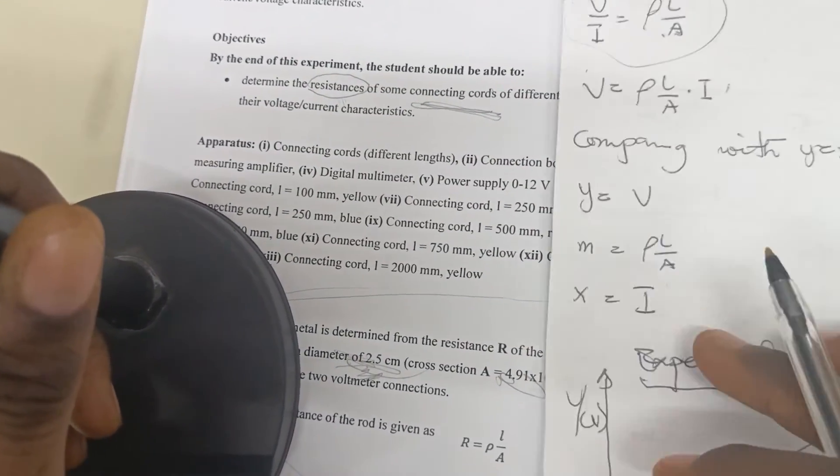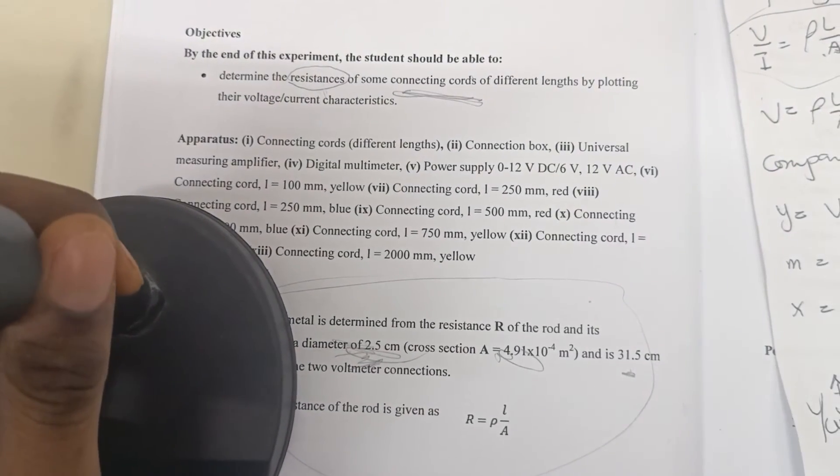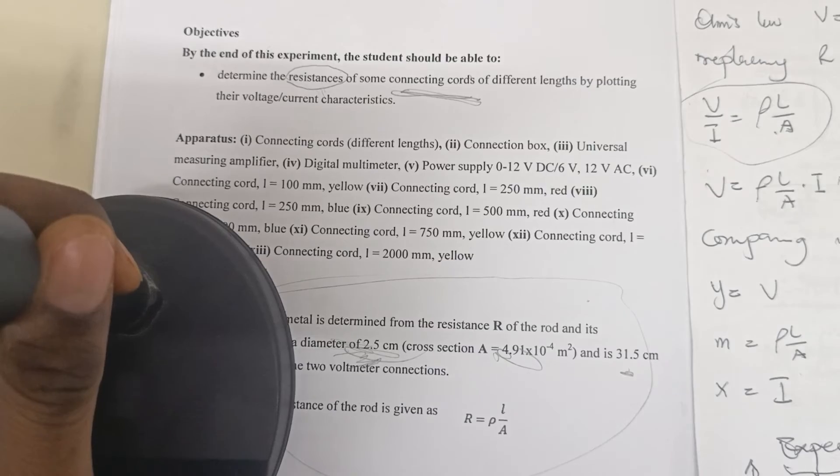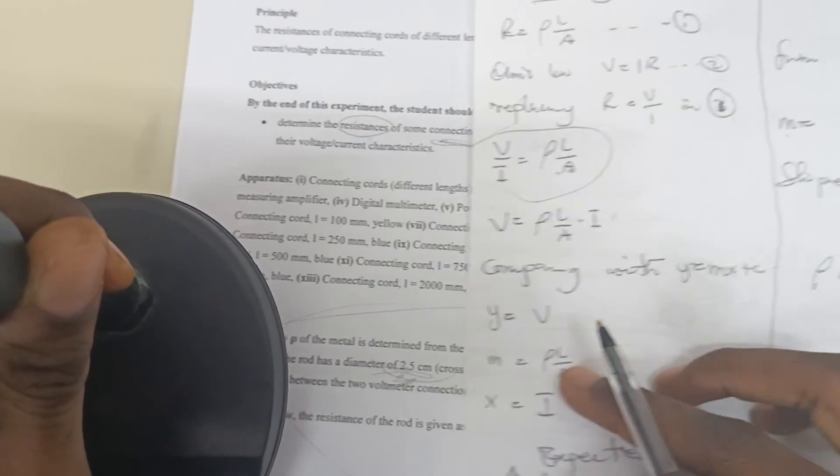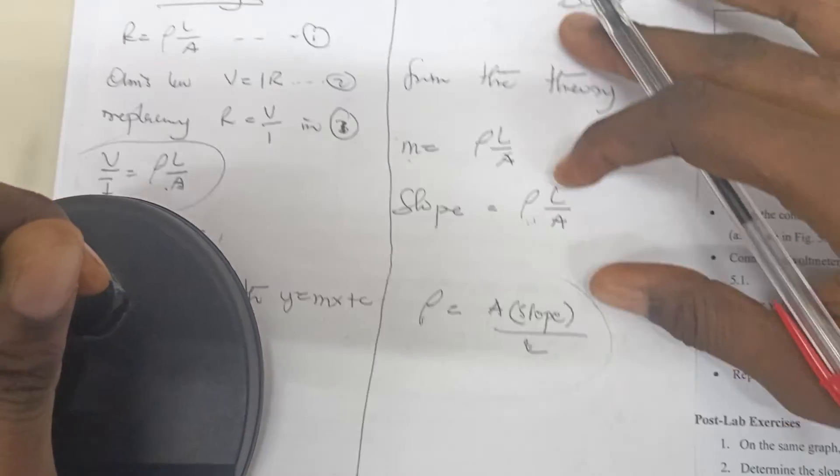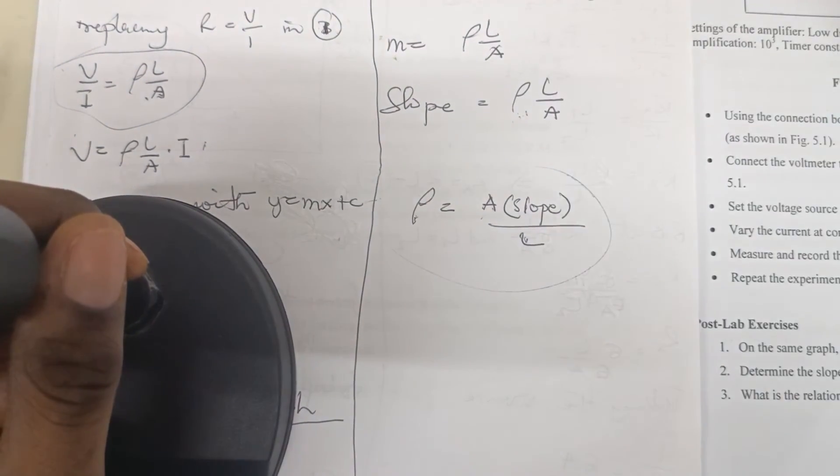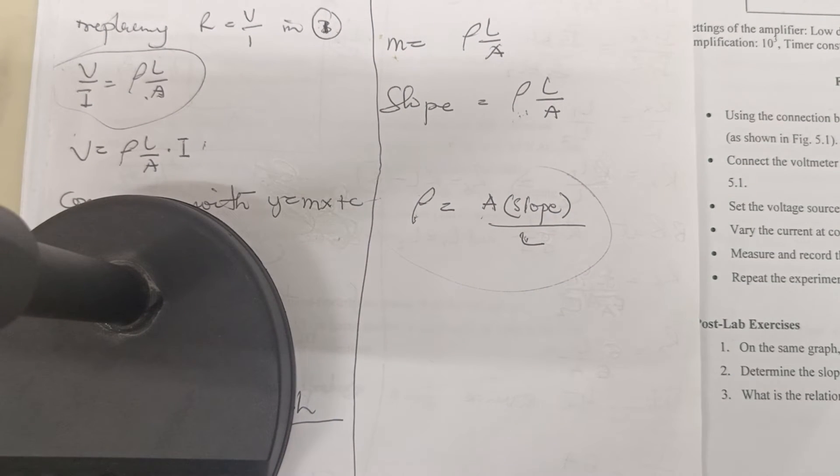Check your books or talk to your lab attendants, and that correction will be given to you. So that's how you find the resistivity. It's very simple, very straightforward. If you have any issues, you can call me.